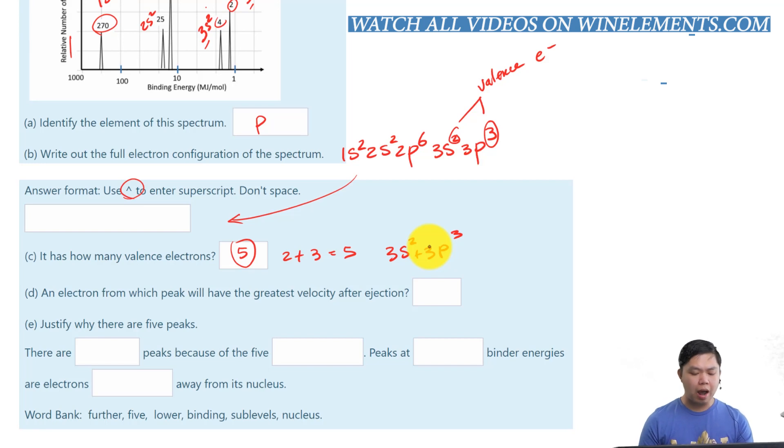An electron from which peak will have the greatest velocity at the ejection? Well, if the one is furthest away, in this case, at peak number 2. There you go. And this one right here.